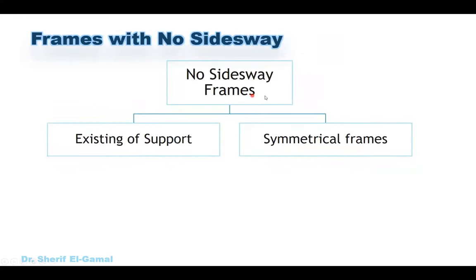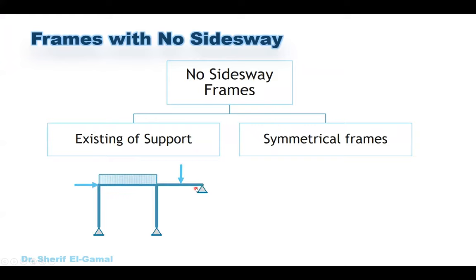For no side sway frames we may have two different types. The first one is when we have an existing support. For example, a frame that is not symmetric and has a horizontal force — without a support it will sway, meaning it will move horizontally at the level of the beam. If we have a pin support, that will prevent the frame from movement, and in this case we can assume no side sway.